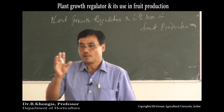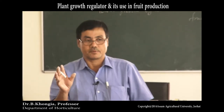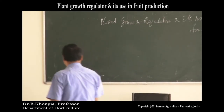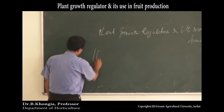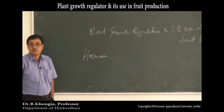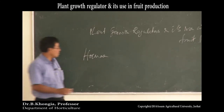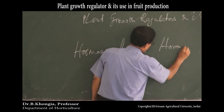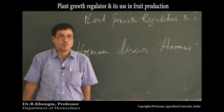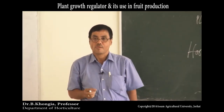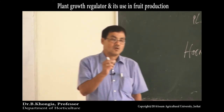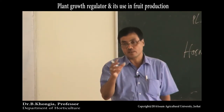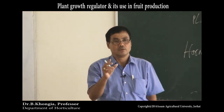A hormone is an organic substance produced naturally in the plant body. The word 'hormone' is derived from the Greek word 'Hormao' (H-O-R-M-A-O), which means 'to stimulate.'